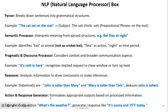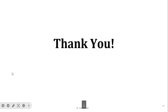The action and response generator formulates the appropriate output based on processed information — for example, for the query 'What is the weather?', it generates a response like 'It's sunny and 75°F today'. The important blocks of the NLP system are: parser, semantic processor, pragmatic and discourse processor, reasoner, and action and response generator. This is all about the generic NLP system — most NLP applications follow this general framework from start to end.